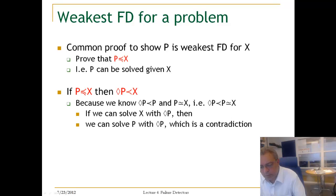So, a common proof to show that P is a weakest failure detector for some problem X is the following. It goes in two steps. First, we prove that X can be used to implement P.